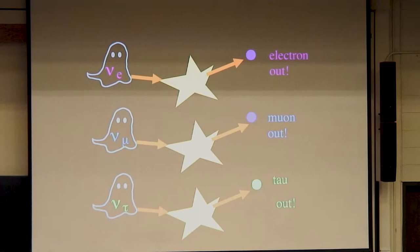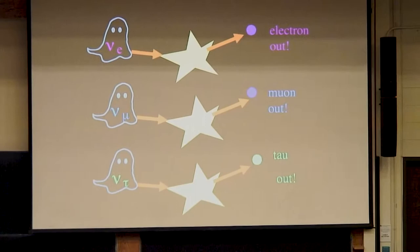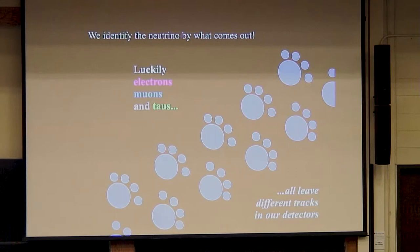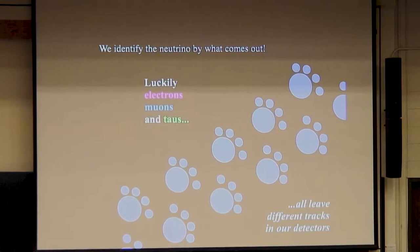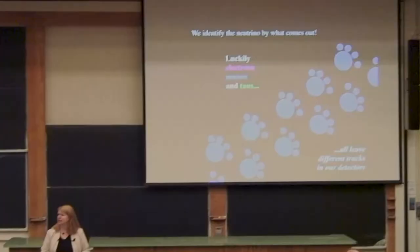So how do I tell my neutrinos apart? It turns out the names actually do make sense: an electron neutrino comes in and an electron comes out; a muon neutrino comes in and a muon comes out; a tau neutrino comes in and a tau comes out. That's how I know what type of neutrino I have. In my detector, my electron, muon, and tau all look different, so I can tell the difference between these particles by the different tracks they leave.